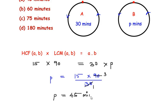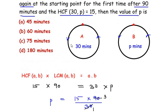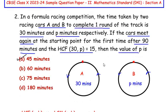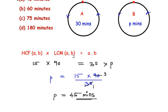That means the racing car B takes 45 minutes to go round the track once. So this is option A. Here we had to make use of the HCF times LCM formula to find out the value of p.